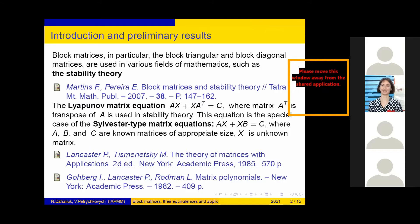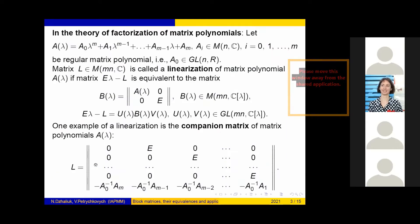Additional information can also be found in monographs of Lancaster and Tismenetsky. In the monographs of Gohberg, Lancaster, and Rodman can be found the next area where block matrices are applied. This is the theory of factorization of matrix polynomials.